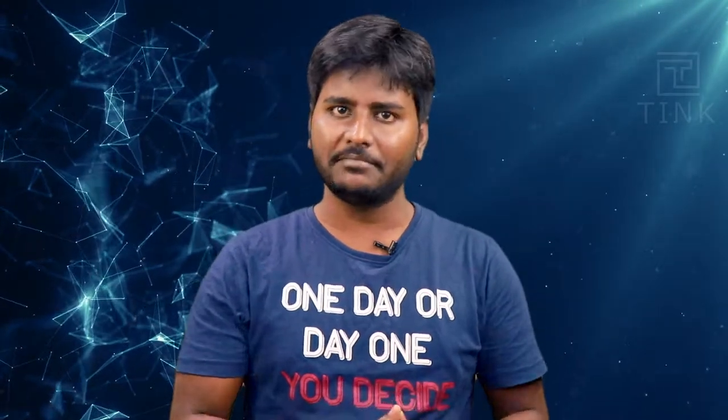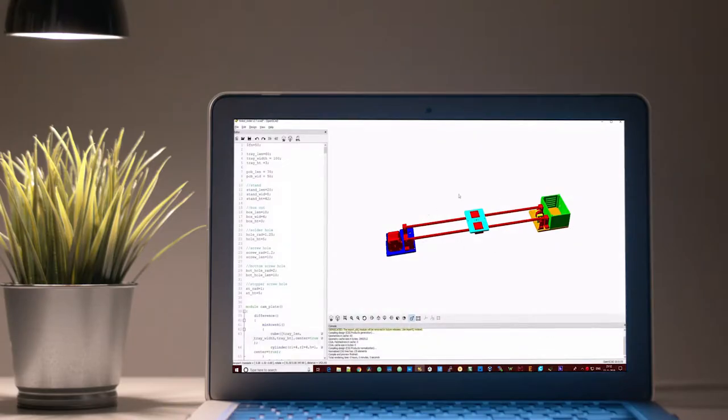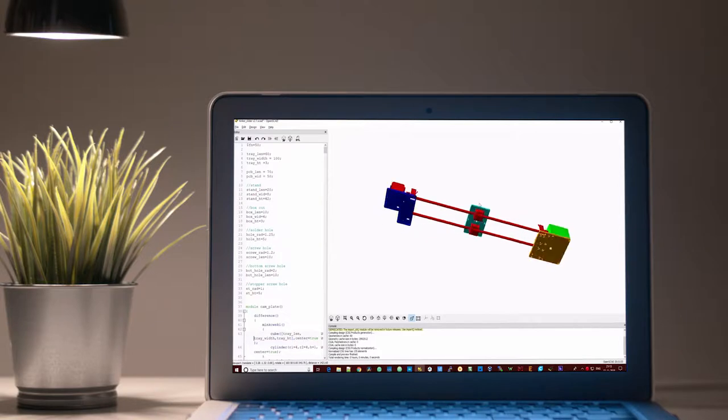I am going to build a 2-axis slider first to gain some experience and then build a 3-axis one eventually. This is the 3D design for the slider. Here you can see the base plate for the camera attached to the rods using linear bearings for it to move freely over the rods.